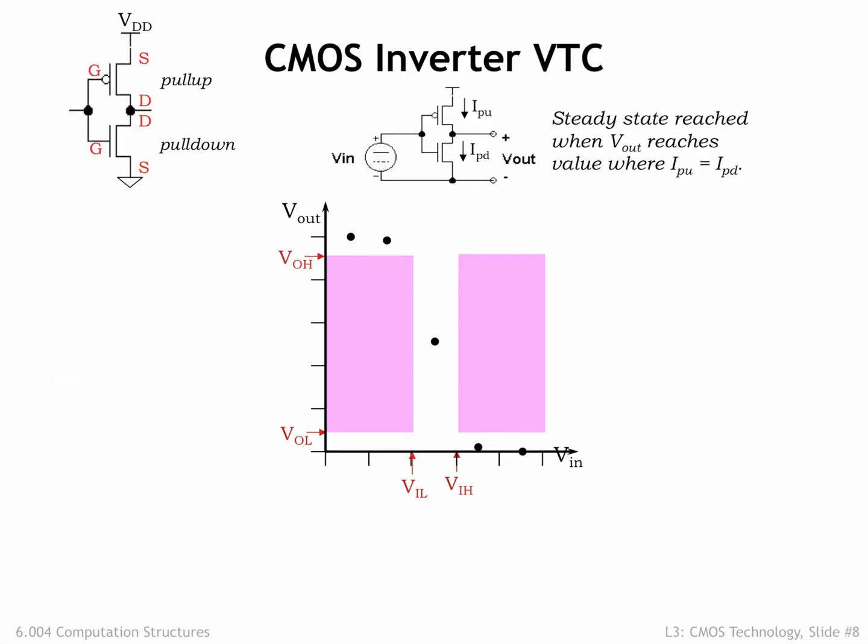Now consider the CMOS implementation of a combinational inverter. If the inverter's input is a digital 0, its output is a digital 1, and vice versa. The inverter circuit consists of a single NFET switch for the pull-down circuit connecting the output node to ground and a single PFET switch for the pull-up circuit connecting the output to VDD. The gate terminals of both switches are connected to the inverter's input node.